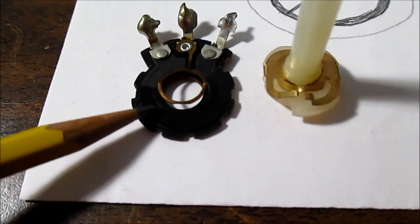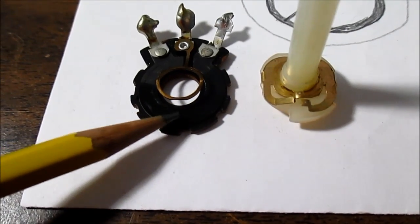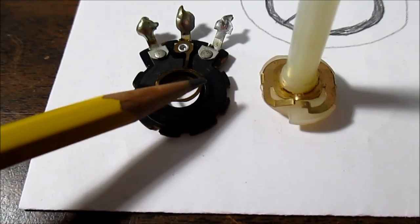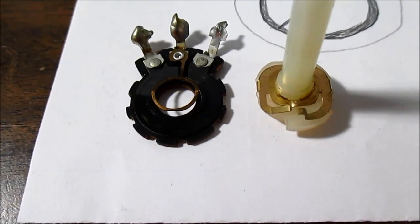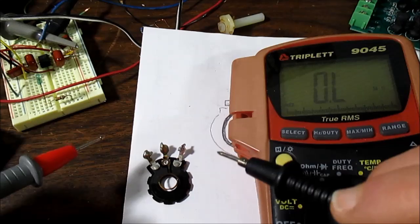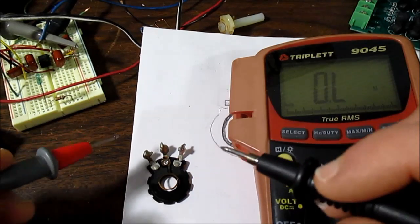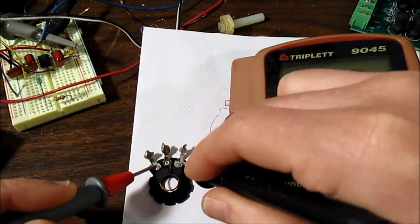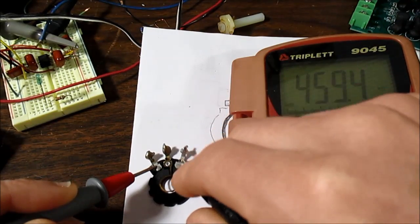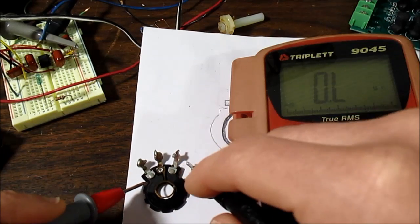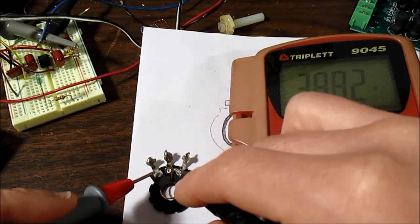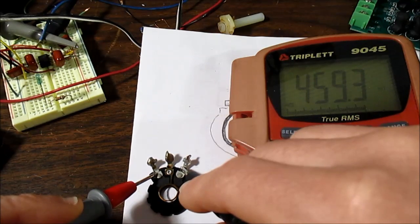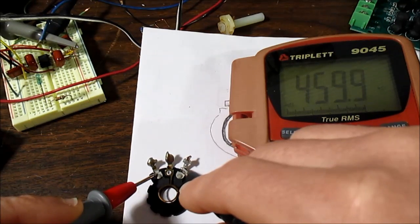Using the resistance scale on my meter, I will check the outer lugs - that'll give us the actual resistance. Gonna move my booger hooks out of the way so you can see the screen on the meter. 459K, it's probably about a 500K potentiometer.